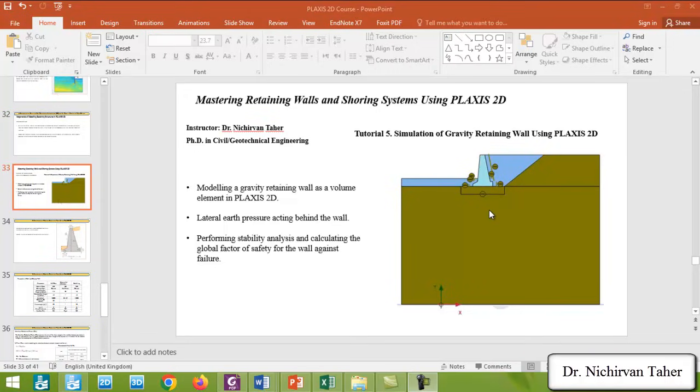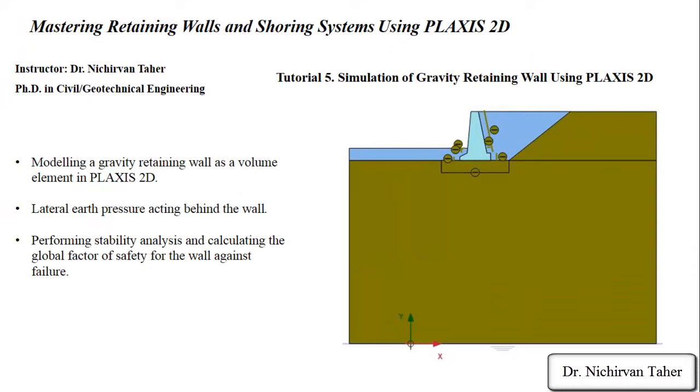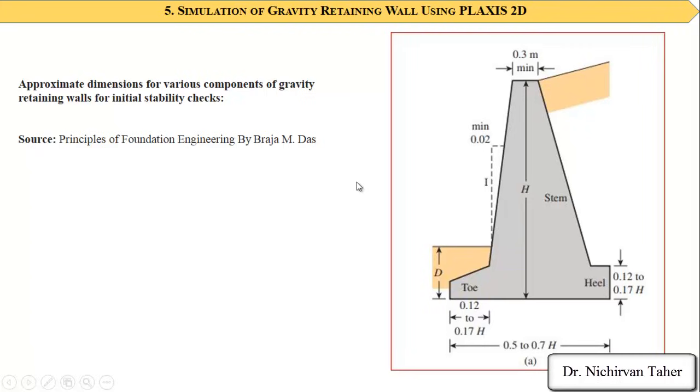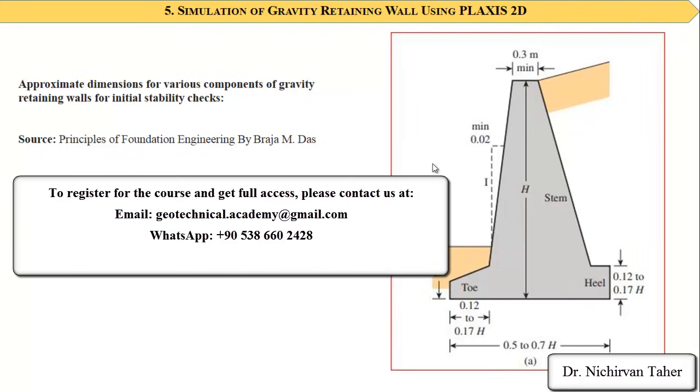This is approximate dimensions for various components of gravity retaining wall. We can estimate the dimensions of various parts of gravity retaining wall using this approximation, as you can see in this figure.